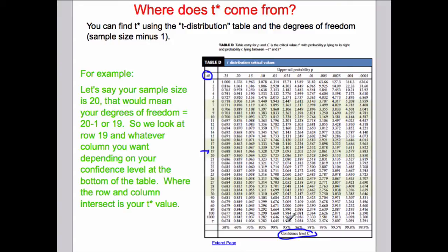If I follow, let's say we're going to do 95% confidence. I'm going to follow this up, follow this across, and where those two would intersect, that number is your t star. In this case, my t star would be 2.093. If my sample size was 20, my degrees of freedom would then be 19.